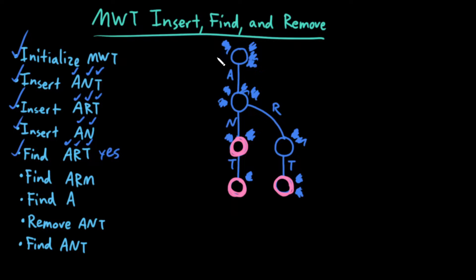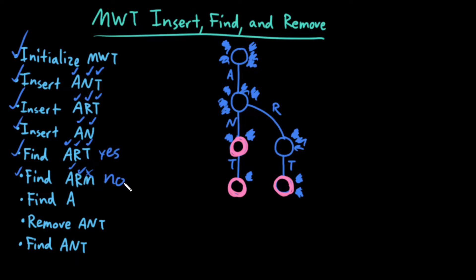Let's try the next one. Start at the root, start at the first letter. Does the current node have a child edge labeled by the current letter? Yes, it does. So I traverse down. Does the current node have a child edge labeled by the current letter? Yes, it does. So I traverse down. Does the current node have a child edge labeled by the current letter? No, it doesn't — there is no child edge labeled with M. Therefore, this word does not exist in my multi-way trie. I finished the find algorithm and returned false.